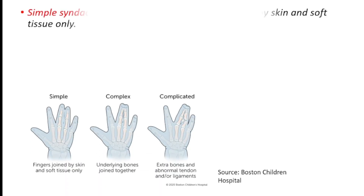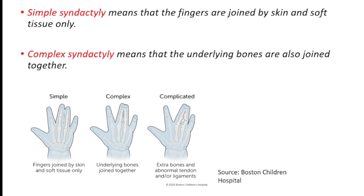Now we're going to compare simple and complex syndactyly. As you can see from this picture, simple syndactyly means the fingers are joined by skin and soft tissue only. In complex syndactyly, the underlying bones are also joined together.